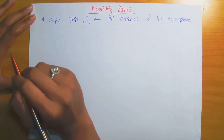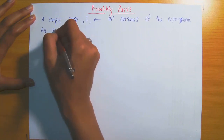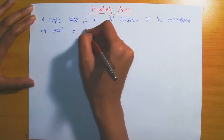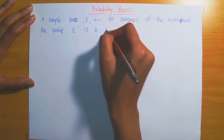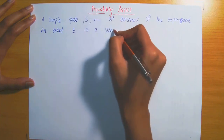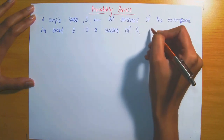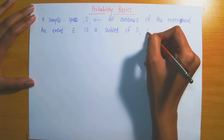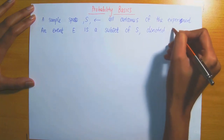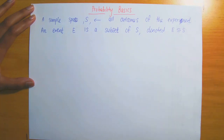Now let's consider an event. An event, E, is a subset of S, which is the list of all possible outcomes. Using our set notation, this is denoted E subset of S.